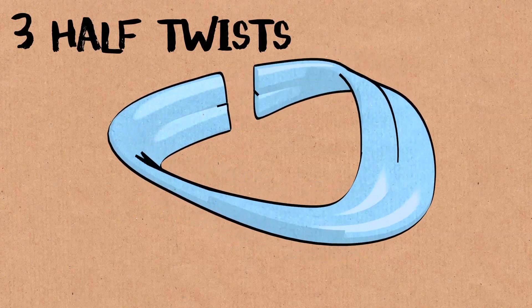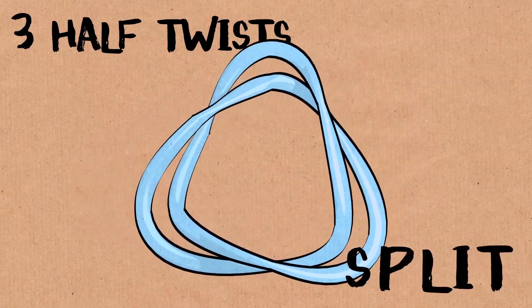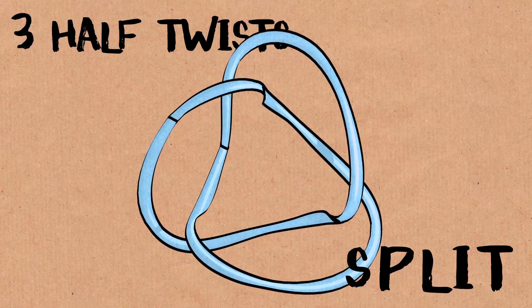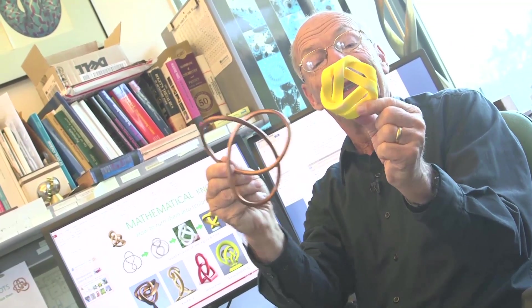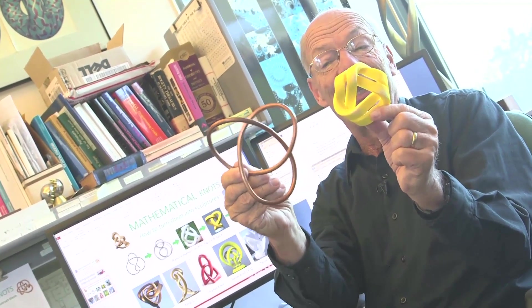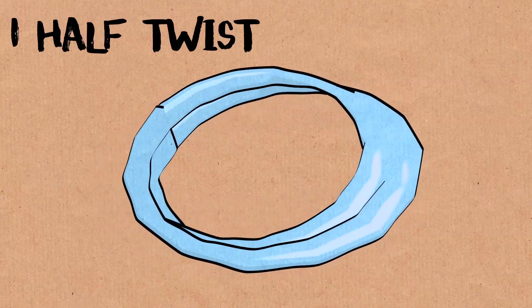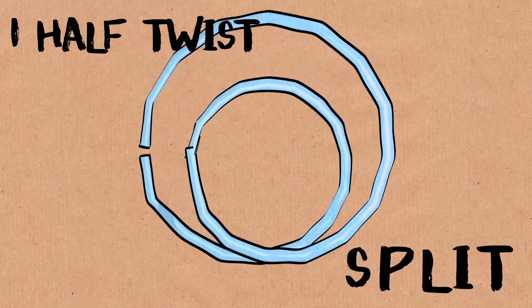But once you take the Mobius band and you split it down the middle, it becomes a knot. Now it happens to be a trefoil knot. Because now if you had these strands being nice and soft, you could move them around and they would be interlinked in exactly the same way as this copper structure. If it's only singly twisted, it will simply open up in a loop that's twice the size and actually has a full twist in it.